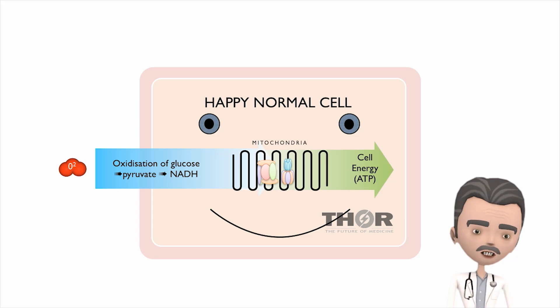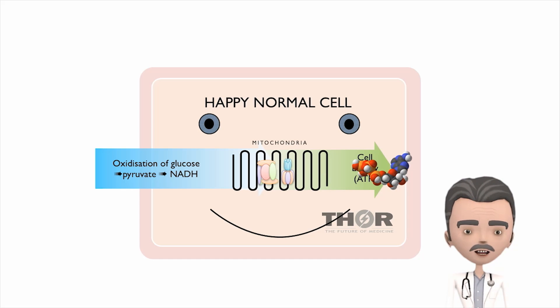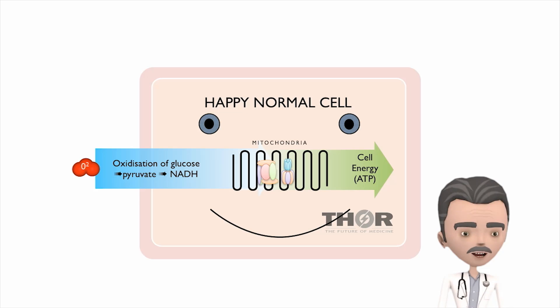This is a normal cell, cytochrome C oxidase. The terminal enzyme in the electron transport chain is combining oxygen with NADH to make the hydrogen ions that drive ATP synthase.